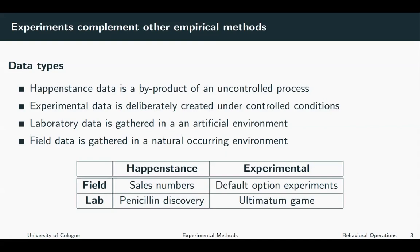You can also distinguish between laboratory data and field data. Laboratory data is gathered in an artificial environment, while field data is gathered in a naturally occurring environment. There are all four possible combinations of happenstance and experimental, field and lab data.